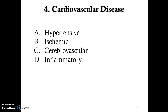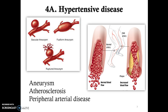The last thing we're going to talk about is cardiovascular disease. There are four main types. The first is hypertensive disease — hypertensive means somebody has high blood pressure. Some things associated with this include an aneurysm, which is a ballooning of the arterial wall that can rupture and cause blood to spill out. It can also be associated with atherosclerosis, which is buildup of plaque in the arteries, and peripheral arterial disease, a circulatory condition where narrowed blood vessels reduce blood flow to the limbs.